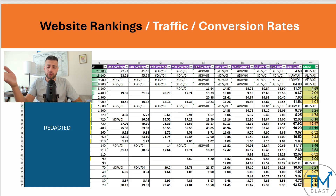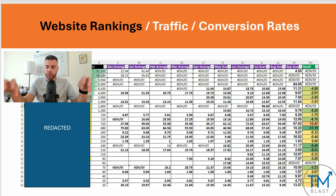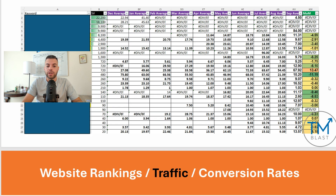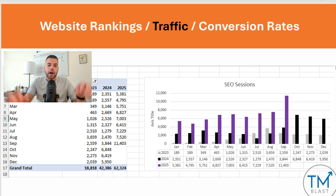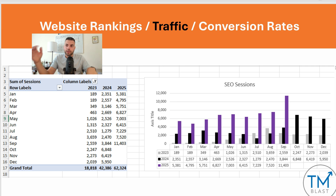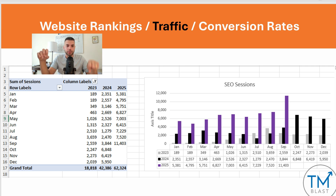I'm making changes to your website to optimize the pages to hopefully improve your keyword ranks, which then will drive more traffic. I go into Google Analytics 4 and export the data into Excel and put it into a pivot table to make it really easy for everyone to see how we're doing from organic search.